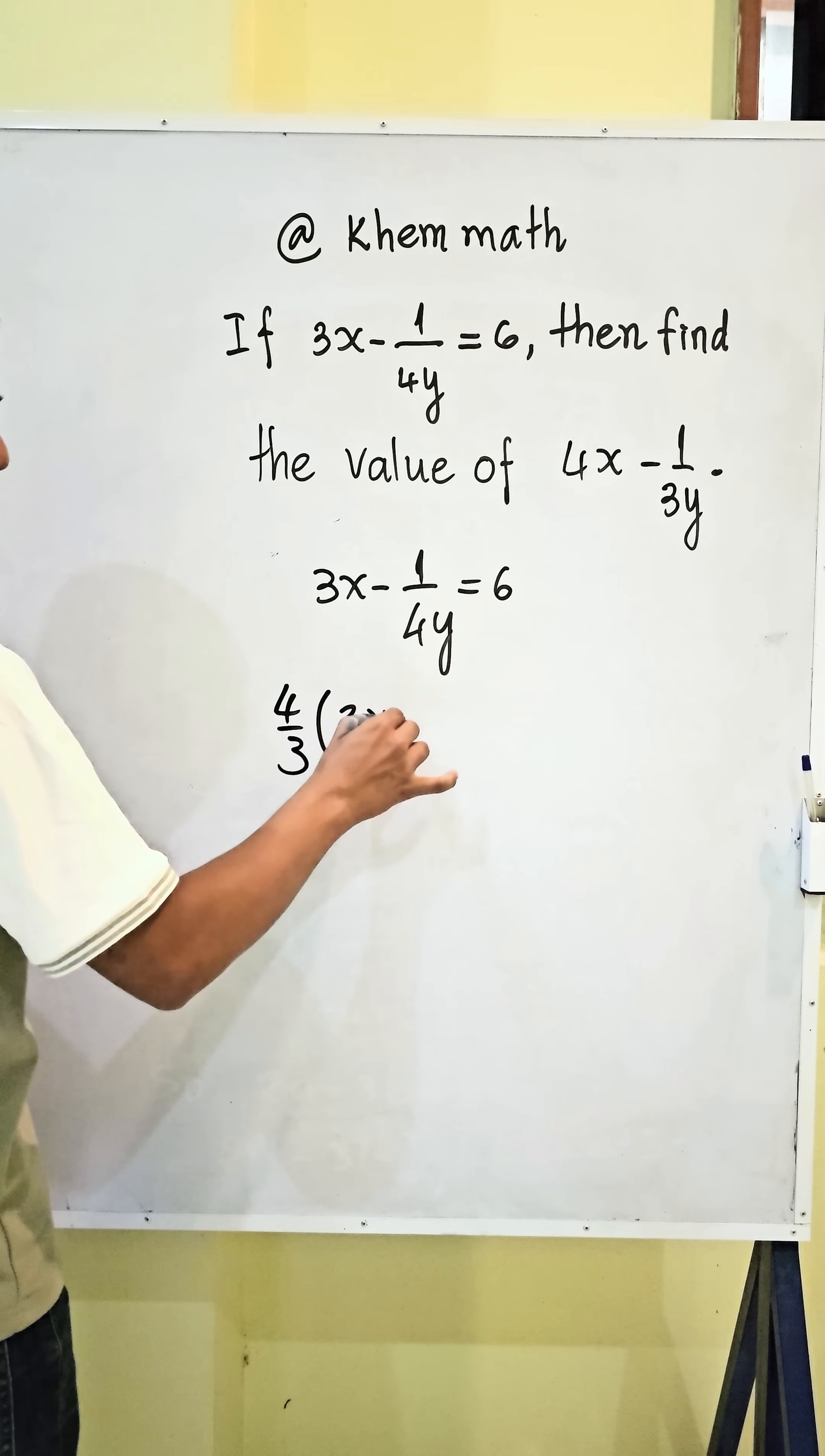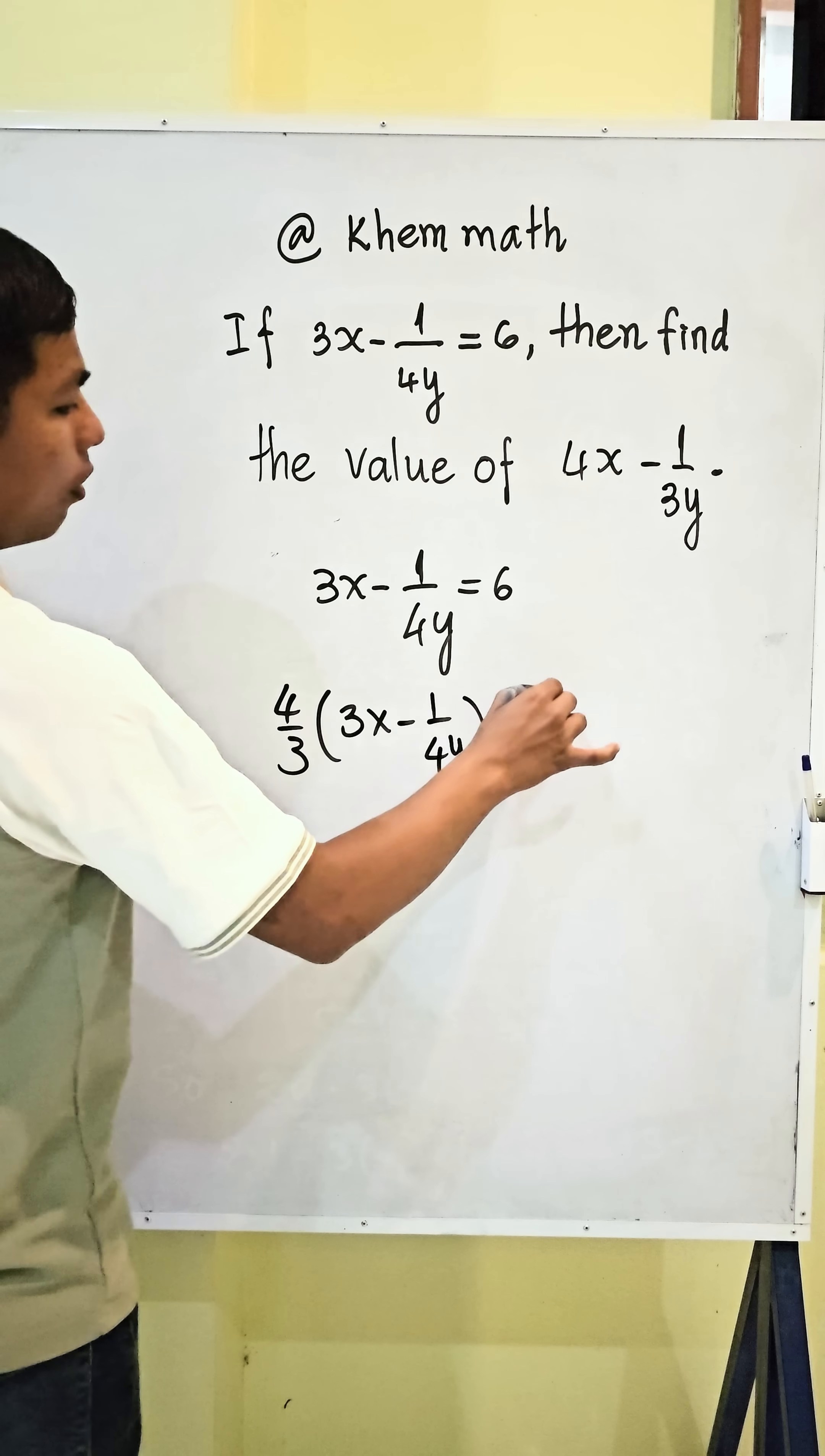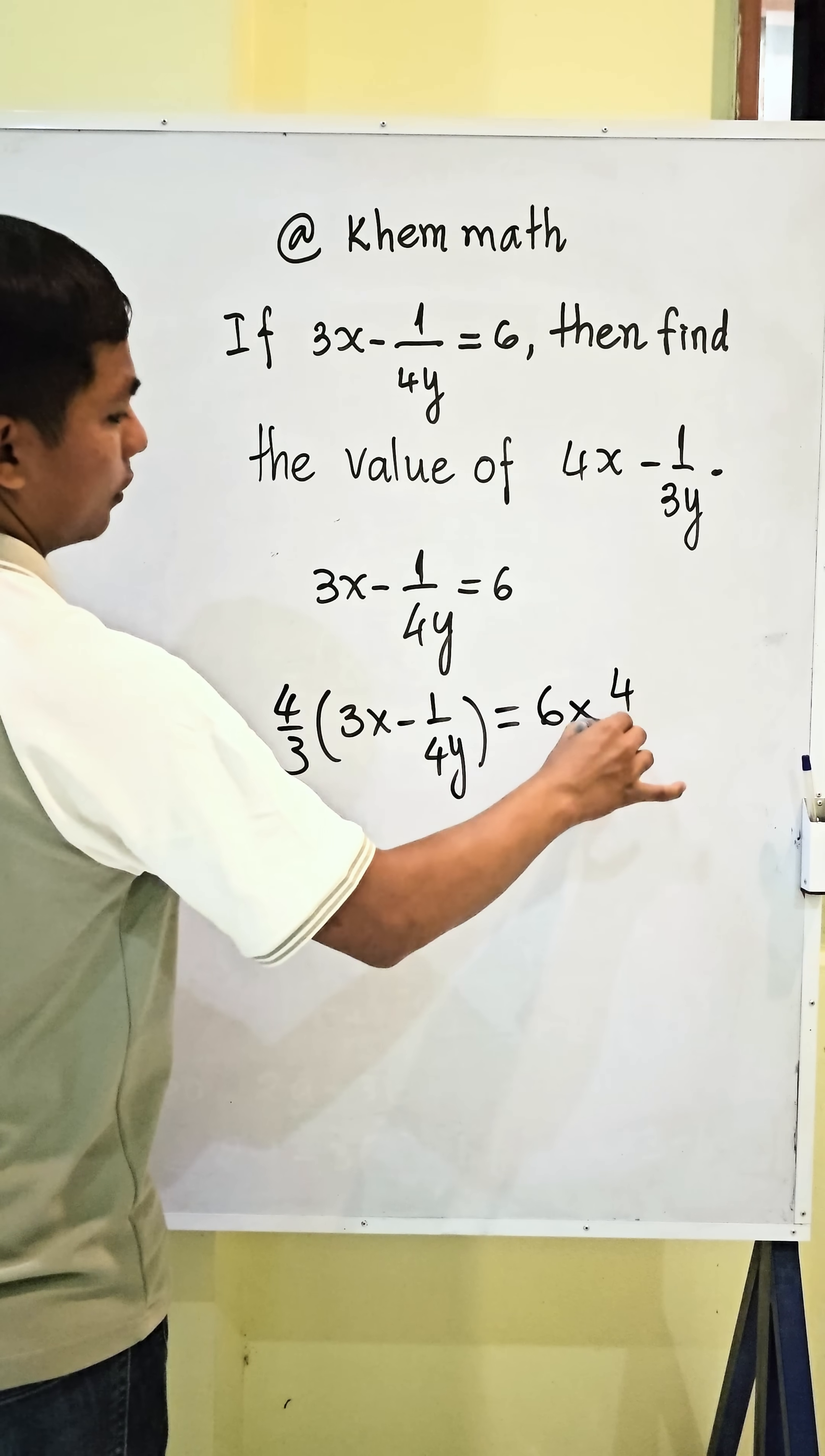We get 3x minus 1 divided by 4y, and equal 6 also multiplied by 4 divided by 3.